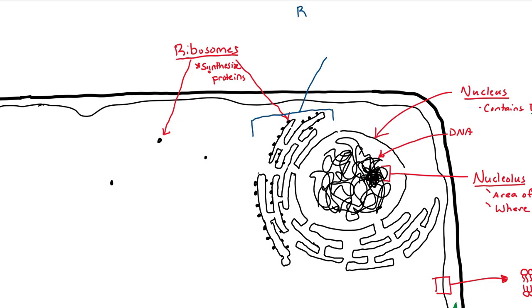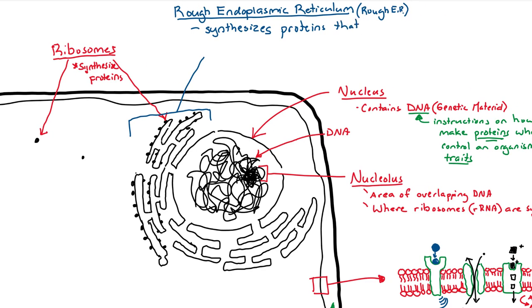Again, ribosomes make proteins. The ER, or endoplasmic reticulum, that has the ribosomes attached is called the rough endoplasmic reticulum, or the rough ER, RER. This is the site of protein synthesis, but not just for any proteins. These proteins will ultimately leave the cell or become part of the cell membrane.